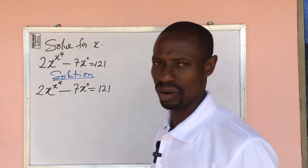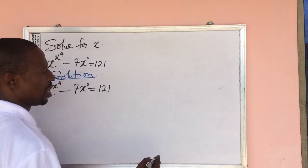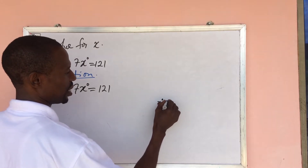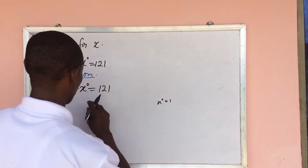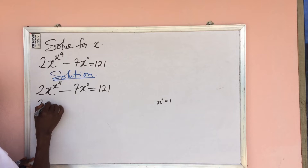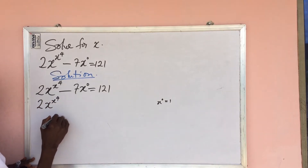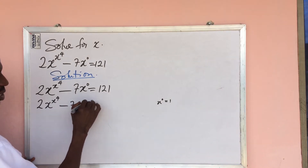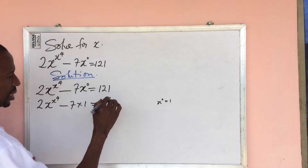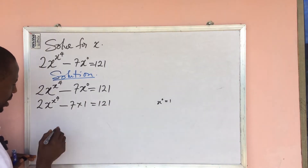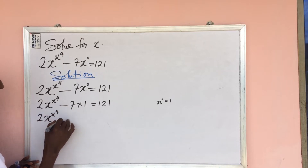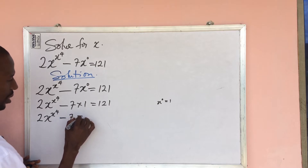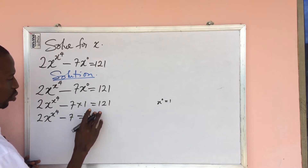What is x to the power of 0? According to the law of indices, x to the power of 0 is equal to 1, so anything to the power of 0 equals 1. So automatically this can be rewritten as 2x to the power of x to the power of 4 minus 7 times 1 equal to 121, and 7 times 1 is 7. This gives us 2x to the power of x to the power of 4 minus 7 equal to 121.